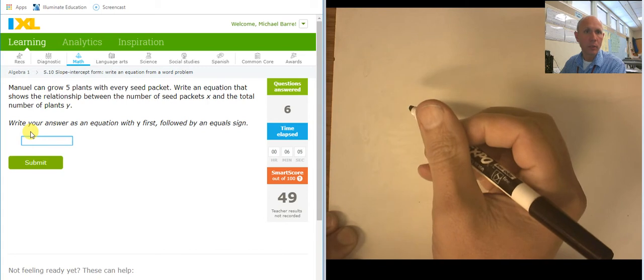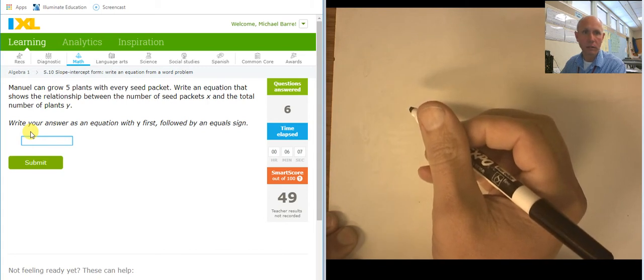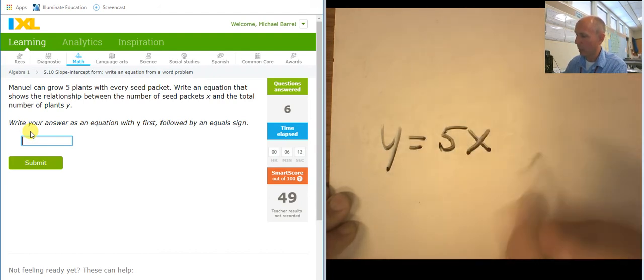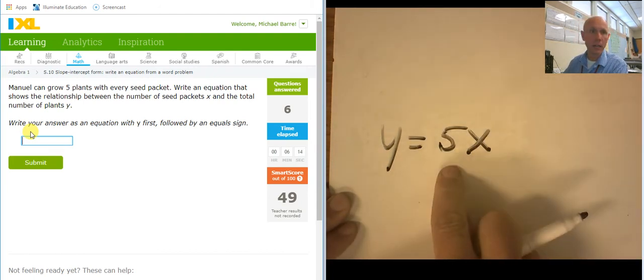You can grow five plants with a seed packet. It doesn't have a starting value, so it's just y equals 5x. Right? One seed packet, five plants. Two seed packets, ten plants.